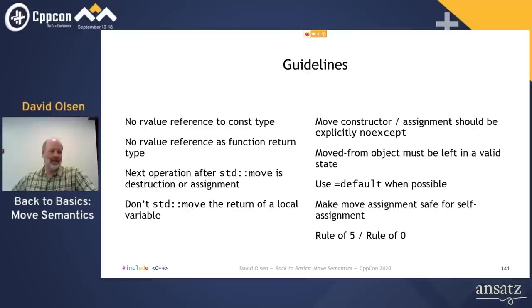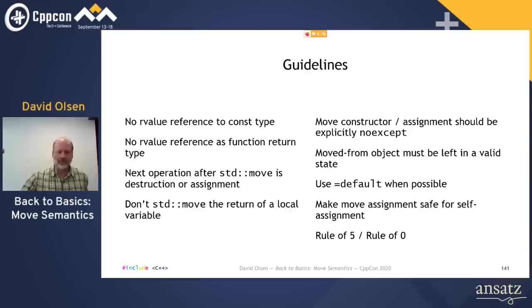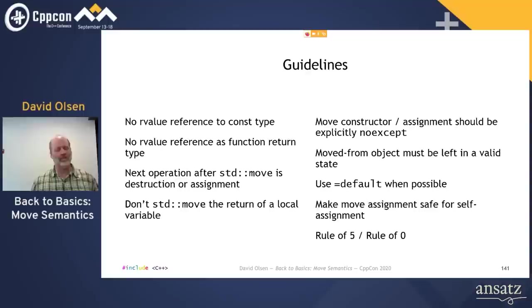Next question: How can you tell that a type returned from a function will be moved instead of copied without looking at the source code of that function? You can't, but if you are just calling the function, you shouldn't care — that's the responsibility of the person writing the function to do correctly. If you are writing the function, you can see whether the return value is moved or copied, or in some cases return value optimization might eliminate it entirely. If a class is well-written, it shouldn't matter, other than for performance, whether it is moved or copied.